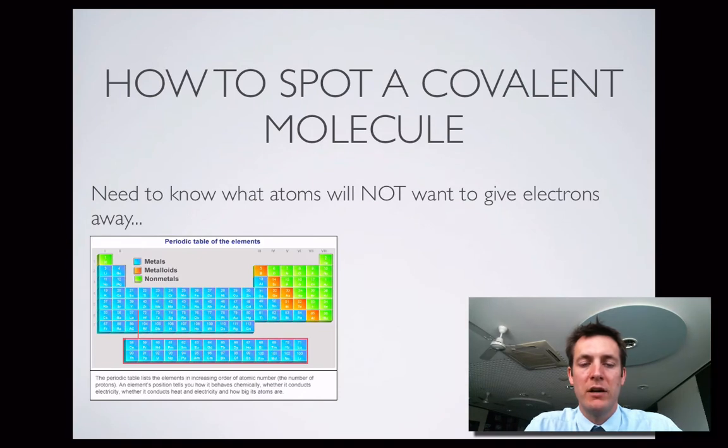So first of all, how do we spot a covalent molecule? Well, as we saw before, if you want to spot an ionic substance, it's going to be a combination of a metal with a non-metal, so an atom that wants to lose electrons combined with one that wants to gain. A metallic structure will just be made of metals, so that is atoms that want to lose electrons. Well, we're now looking at elements that want to gain electrons.